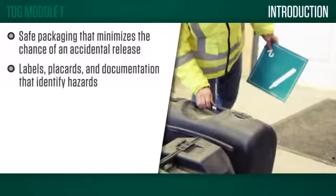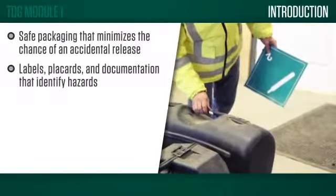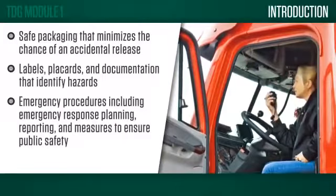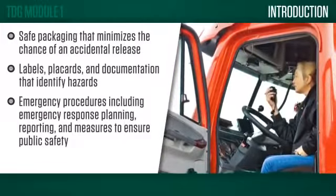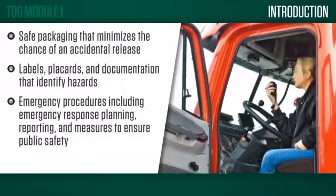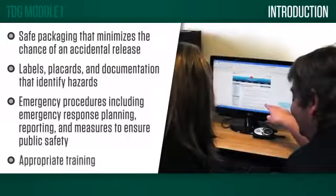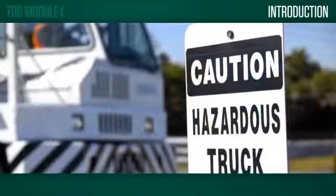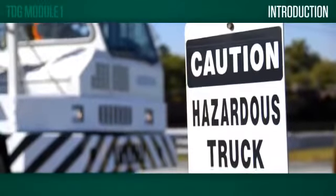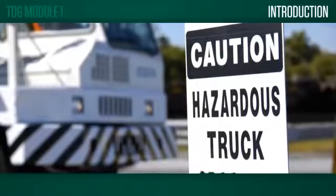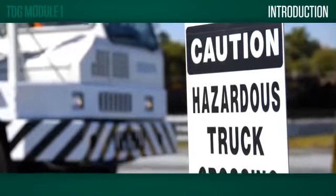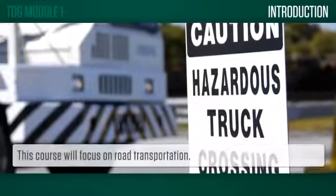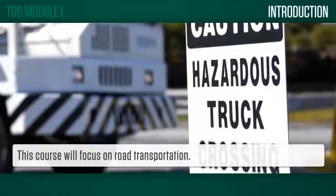Labels, placards, and documentation that identify hazards; emergency procedures, including emergency response planning, reporting, and measures to ensure public safety; and appropriate training. The Clear Language regulations apply to transportation by road and rail. Equivalent regulations are in place for air and marine transportation. This course will focus on road transportation.